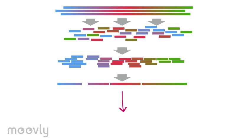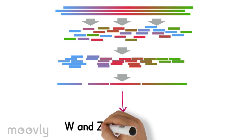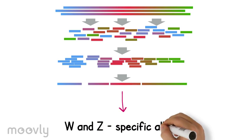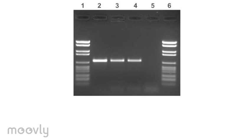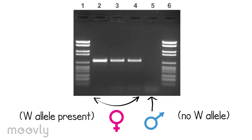First, I'll analyze the sequences of sex-linked DNA scaffolds previously collected from RAD-seq in a program called Geneious, in order to find W and Z-specific alleles. I will then use PCR as well as qPCR to validate my findings.